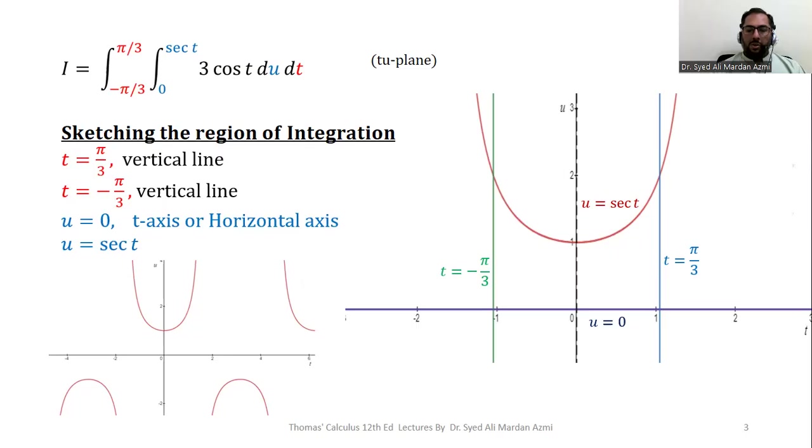So in order to get our region of integration, we will ignore this vertical line which is t equals 0. We don't have that as a boundary, so our region of integration is this whole portion.